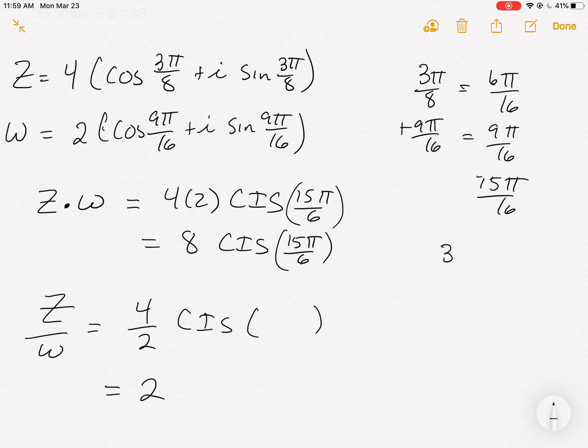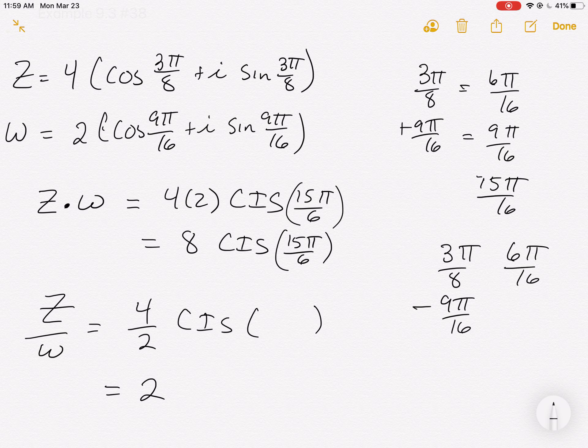And it's going to be CIS of the subtraction of the two. And so here's where it gets a little bit trickier. It's not much trickier. But they must be subtracted in this order where the Z angle is up top and the W angle is on the bottom. And so that's going to be 6π over 16 minus 9π over 16. And so we're going to come up with initially negative 3π over 16.